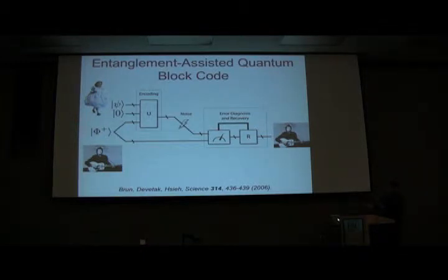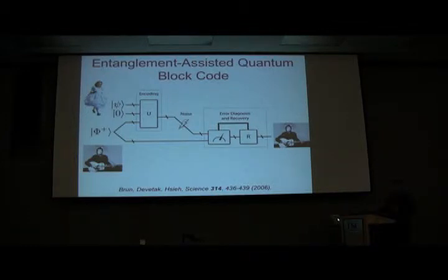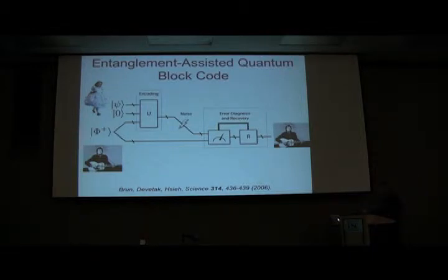Let me talk about how an entanglement-assisted code operates — Todd talked about this in detail in his earlier talk. Alice begins with some information qubits, some ancillas, and ebits shared between her and Bob. She performs a local encoding unitary on her qubits and sends them over the noisy channel. It's assumed that Bob's half of the ebits don't undergo noise — this is the same assumption used in the proof of entanglement-assisted capacity theorems. There are some codes that can correct for errors on Bob's side, but it's not true in general.